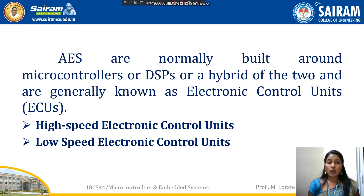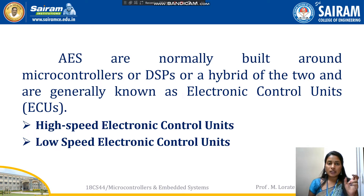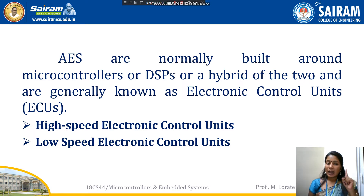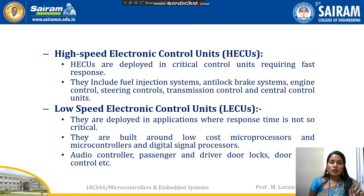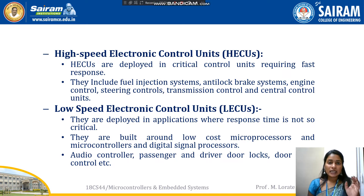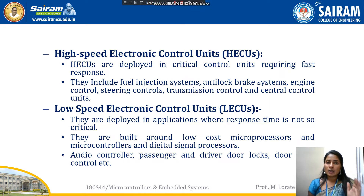Automotive embedded systems are normally built around a microcontroller, digital signal processor, or a hybrid of these two — this is called an Electronic Control Unit (ECU). The electronic control unit used in automotive systems is broadly divided into two categories: high-speed electronic control unit and low-speed electronic control unit. High-speed ECUs are used in applications where fast response time is highly critical.